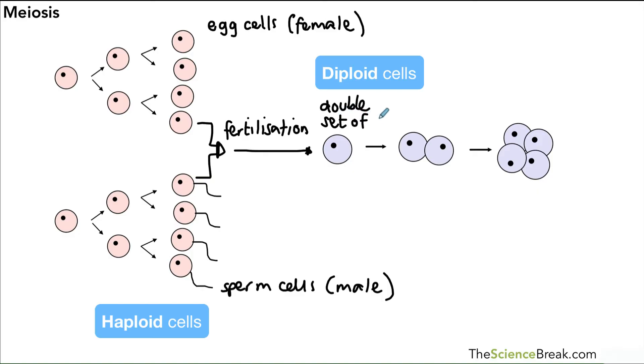That fertilized egg will then have our double set. We started off with a single set in the egg cell and the sperm cell, and after fertilization we return to our double set of chromosomes - in humans that's 46.